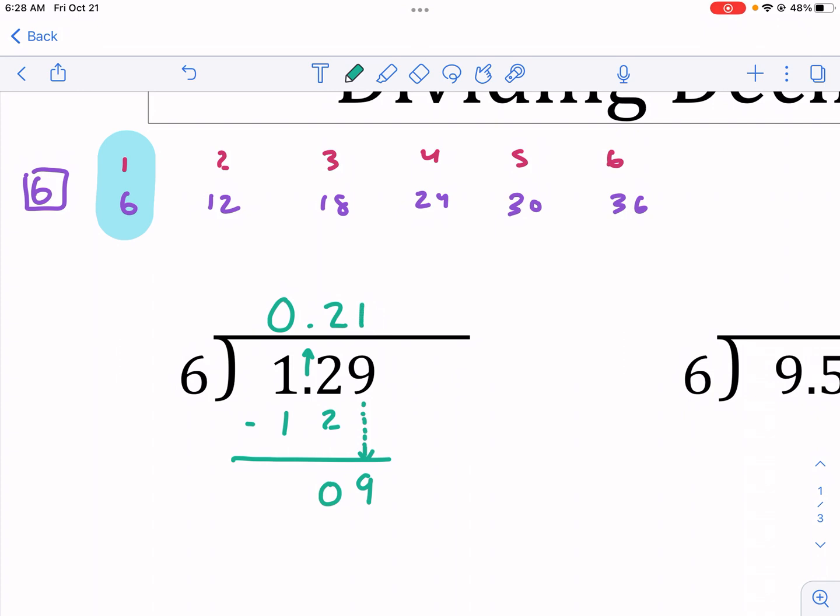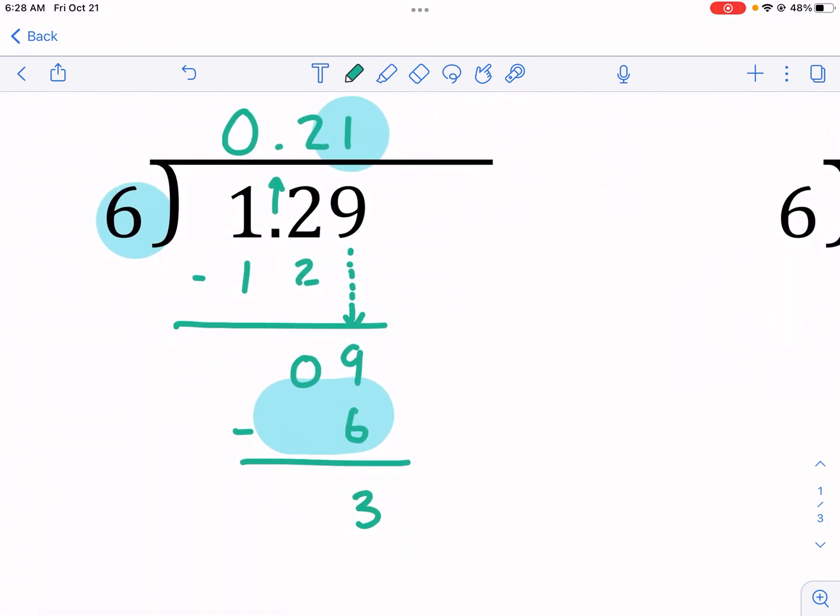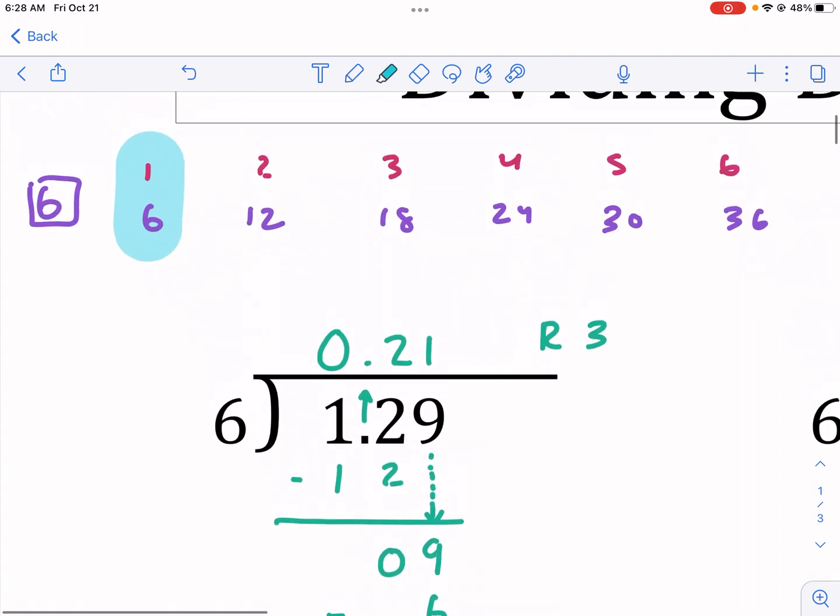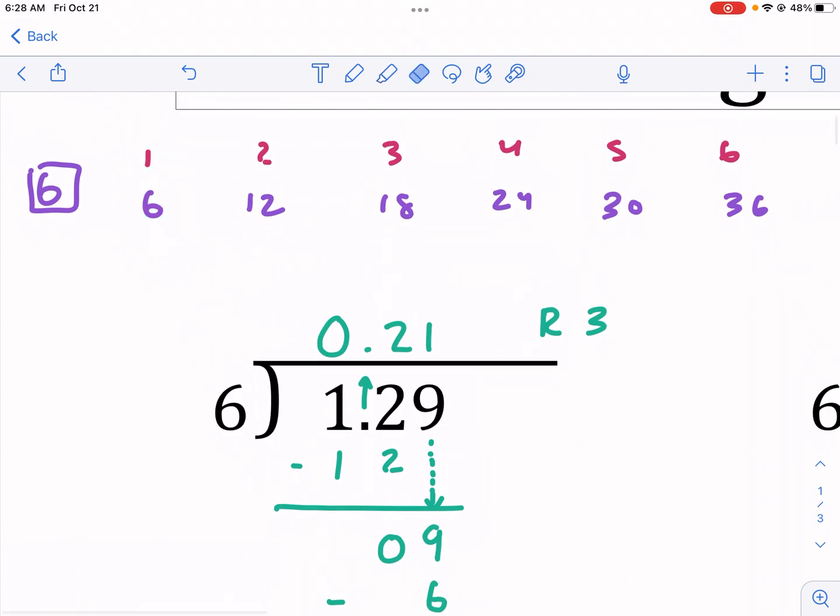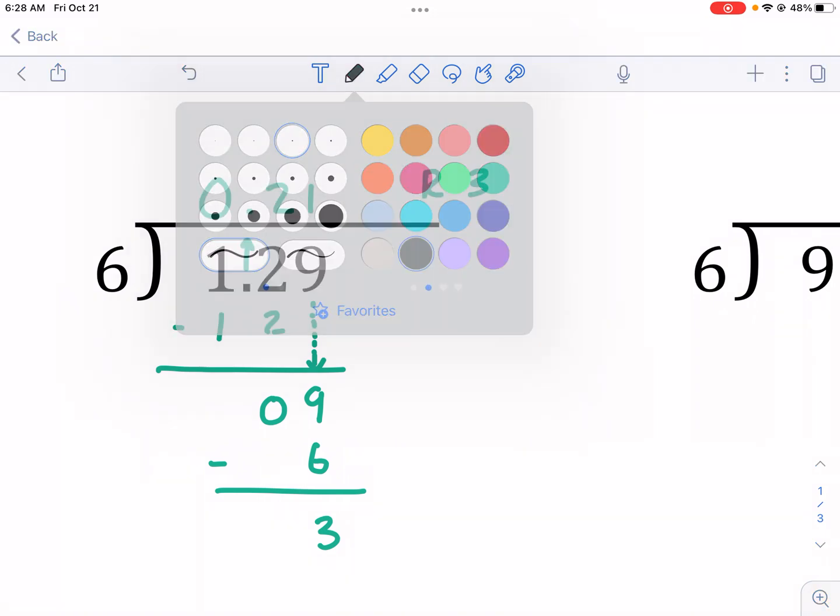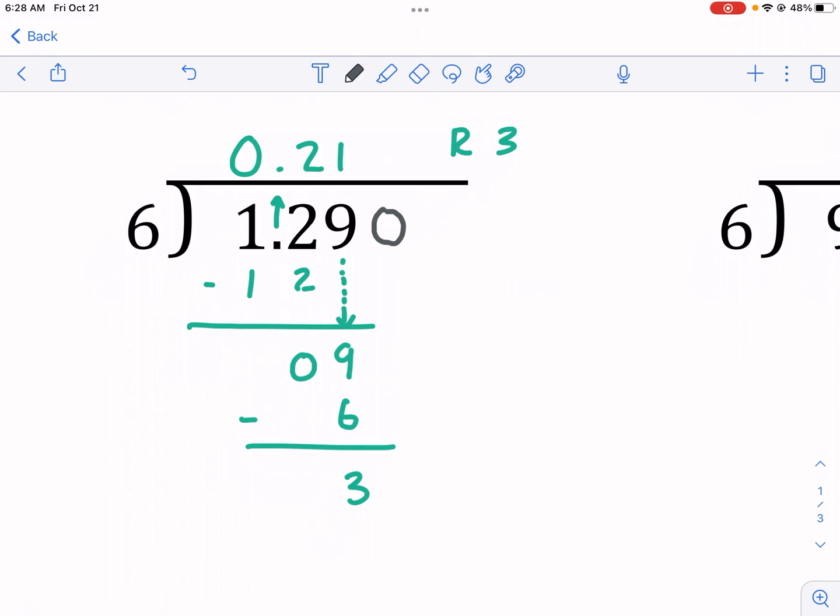So, 1 times 6. Again, I'm going to do 1 times that 6. Write that answer there, and that is 6. I subtract, and this time, I'm going to have something left over. I have 3. Now, you can't just put remainder 3. That's the temptation. You probably learned that initially that we have remainder 3 because 6 doesn't go into 3, okay? You'll see up here, 3 is not a multiple of 6. However, since we're doing division with decimals, we need to continue the pattern.